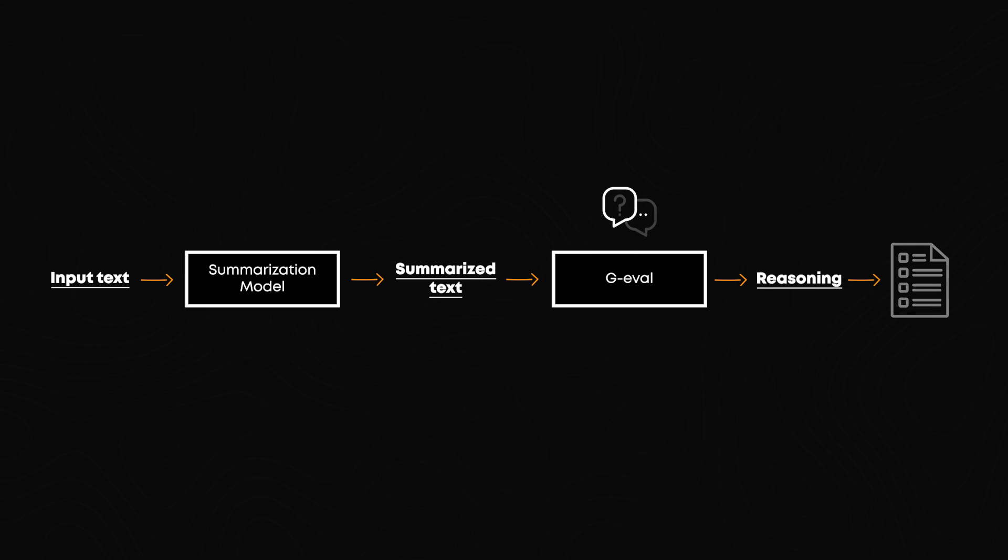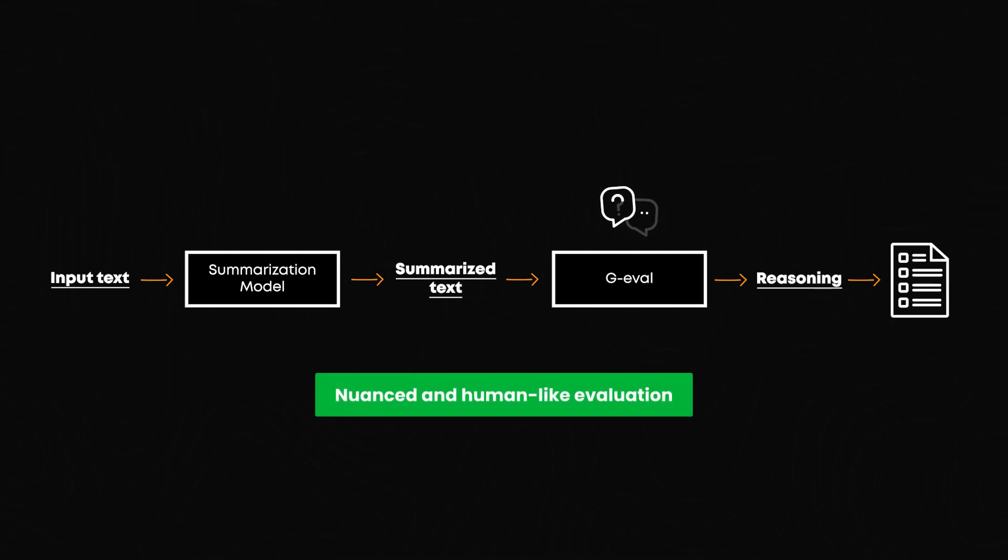Afterward, the model fills out a form evaluating the summary based on predetermined criteria. This dual approach ensures a more nuanced and human-like evaluation. This method is becoming more and more popular because it aligns more closely with human reasoning, offering a balanced view that incorporates both the mechanical accuracy of automated metrics and the qualitative insights of human evaluators.